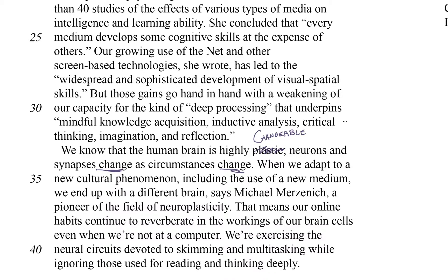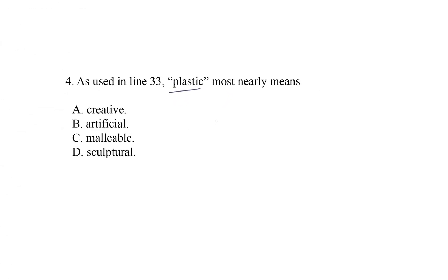Now let's take that prediction back to our choices. Which word means something similar to changeable? Choice A: creative — that doesn't mean changeable. Choice B: artificial — that doesn't mean changeable. Choice C: malleable — that word does indeed mean changeable. In particular, malleable means that something can be molded or shaped. For example, clay is malleable, so this is almost certainly our answer. I'm going to make a little star. Choice D: sculptural — that doesn't mean changeable. So choice C matches our prediction. And even if we didn't know the word malleable, we were able to eliminate the other choices because they didn't match.